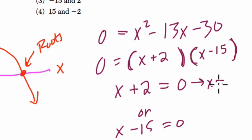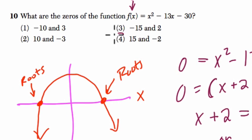In the first case, x would equal negative 2. If you plug in negative 2 up here for both x's, you will get a product of zero. Or x could be 15. If you plug in 15 for both x's, you'll get a product of zero. So these are the x values of our roots, 15 and negative 2. Choice four.